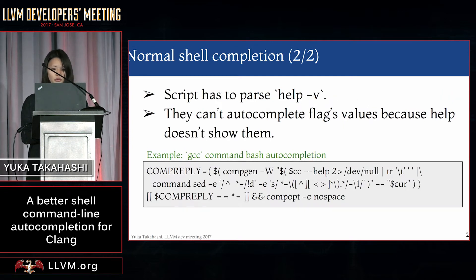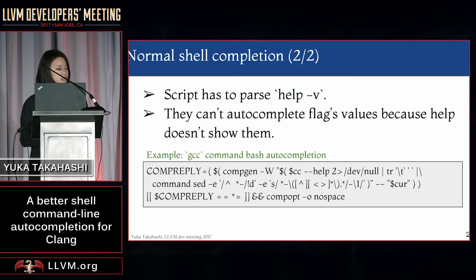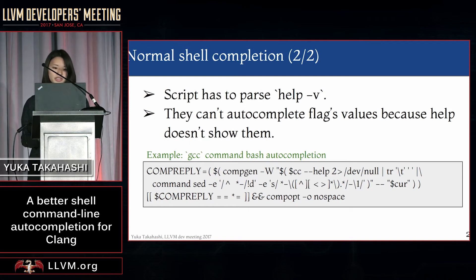Another way to implement shell completion is to pass help minus void. This is smarter than the previous one, but it still cannot autocomplete the flag values because help doesn't show them.